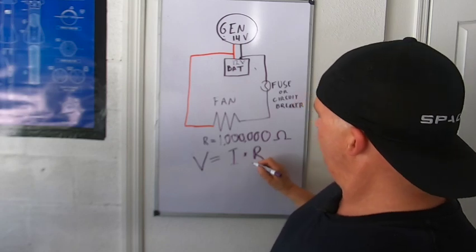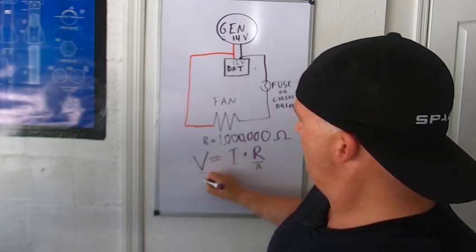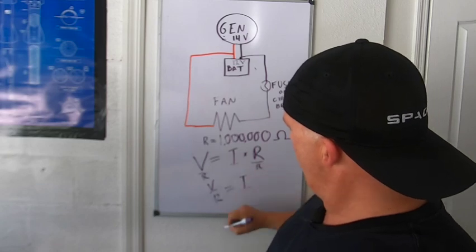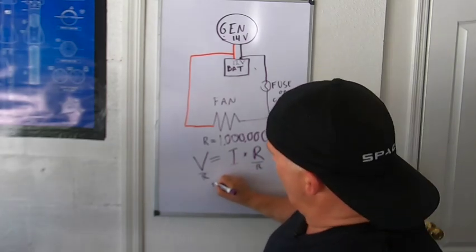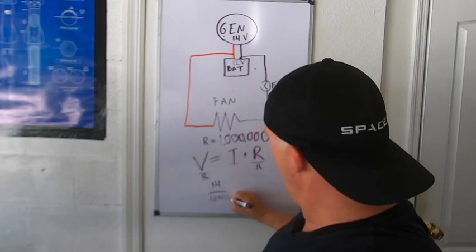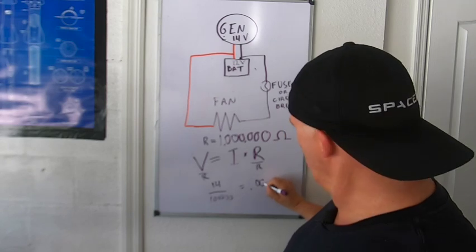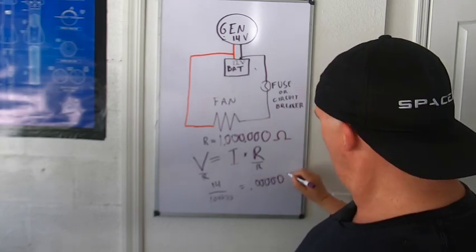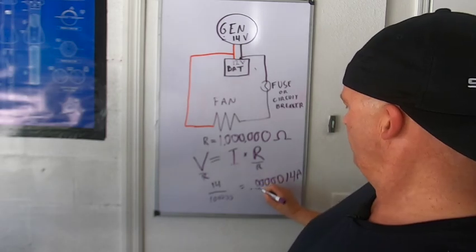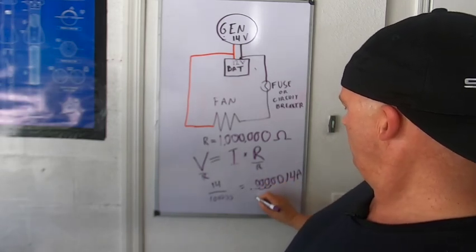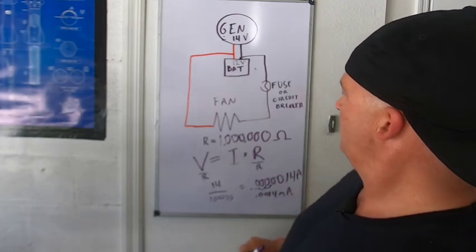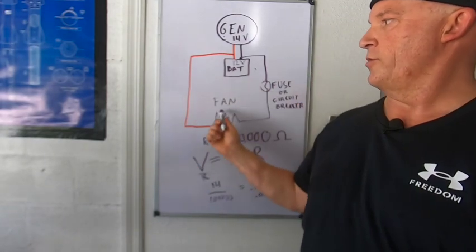So let's do some calculations here. We're going to divide both sides by R and we're going to get V over R equals I or 14 volts over 1 million ohms equals 0.000014 amps. You can move this decimal over three times and you can call it 0.014 milliamps. And that's what the current going through the circuit is.